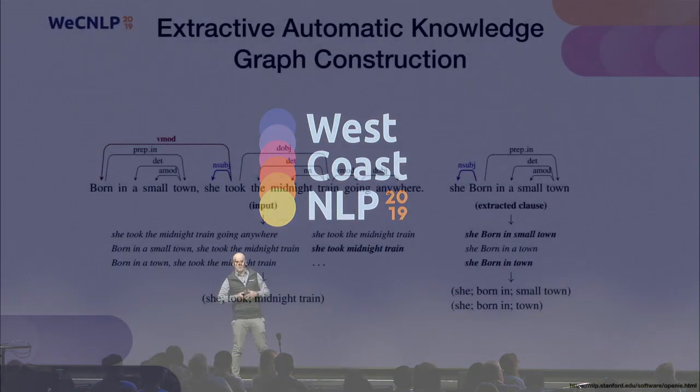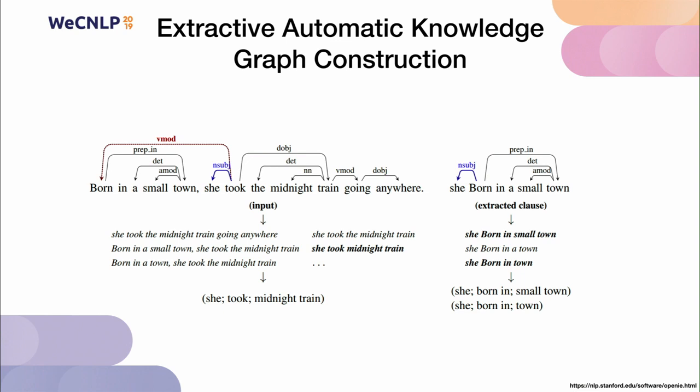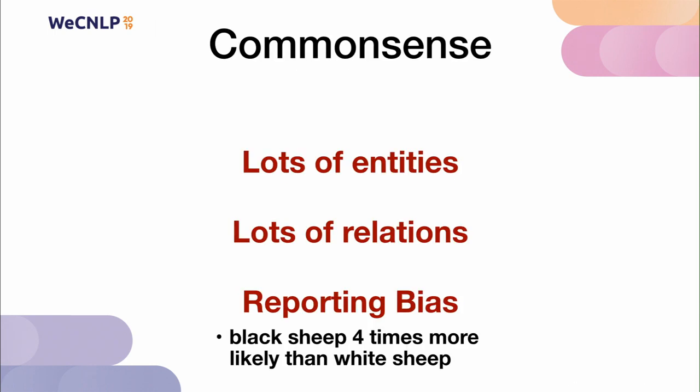A common approach towards finding ways to enumerate all these forms of common sense without relying on manual annotation has been to use extractive methods for automatic knowledge graph construction. Generally what this looks like — commonly known as open IE — is using some type of feature-rich pipeline to identify entities and phrases, then extracting tuples directly from text. For example, from the sentence 'born in a small town, she took the midnight train going nowhere,' you'd be able to identify 'she took midnight train' or 'she born in a small town.'